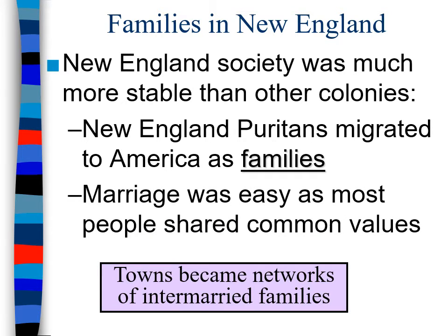Marriage was extremely easy because if you weren't Puritan, you were gone — so there were a lot of shared values. They were very strict and staunch on that. Because of that, towns really became these small interconnected networks of families that were intermarried. These people had a lot of similar values and were related in some way if you kept tracing it back. This develops individual towns based on tight family communities, really developing the New England towns that way — lots of mini small towns all throughout, as you see when you look across towns in Massachusetts.